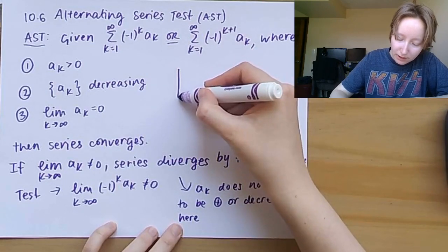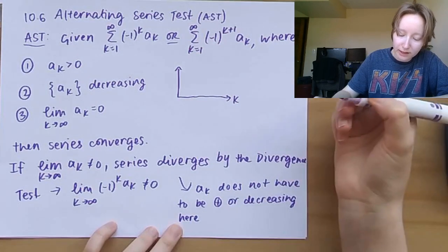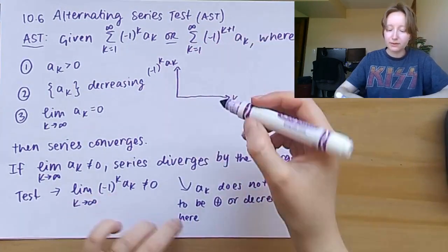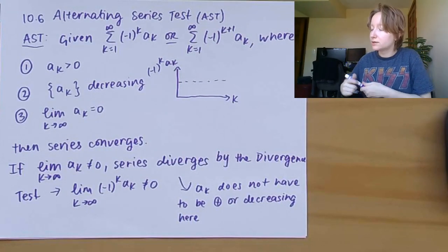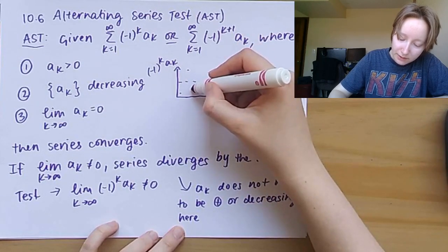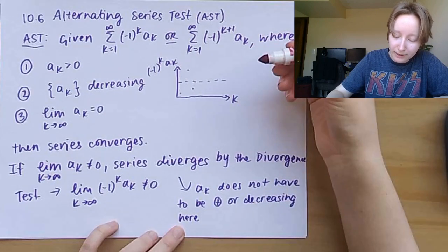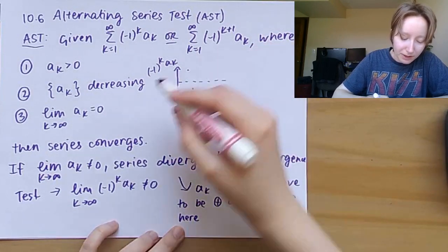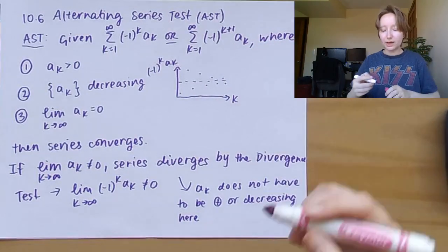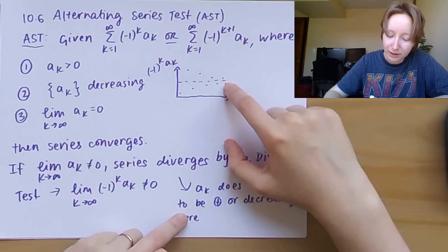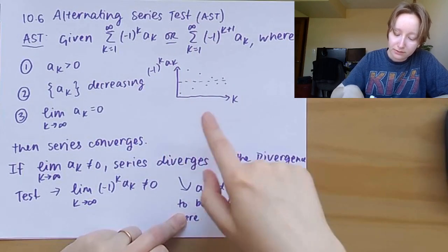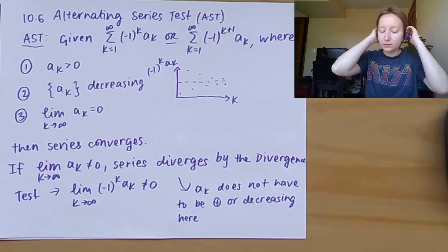Let's draw a quick graphic of what's happening. On one axis I have k, and on the other I have (-1)^k · a_k, so I have this alternation of the sign. If my series converges, I'll start off farther away from the limit of the sequence, but because my a_k's are decreasing they get closer and closer to that limit value while flipping sign — and in that case my series will converge.